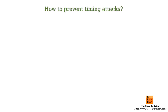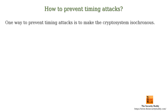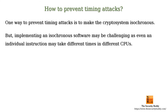How to prevent timing attacks? One way to prevent timing attacks is to make the cryptosystem isochronous. If we can do so, then every computation will take a fixed amount of time irrespective of the complexity of the computation. But implementing an isochronous software may be challenging, as even an individual instruction may take different times in different CPUs.